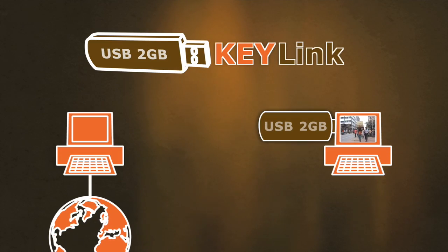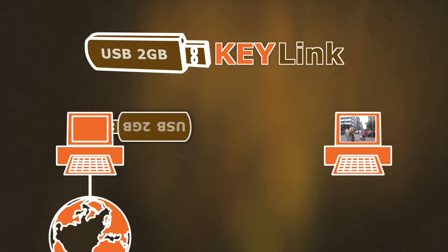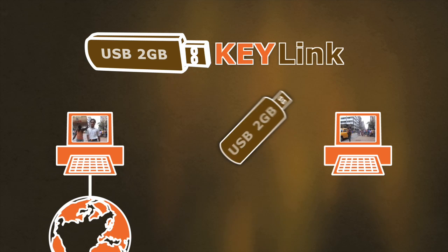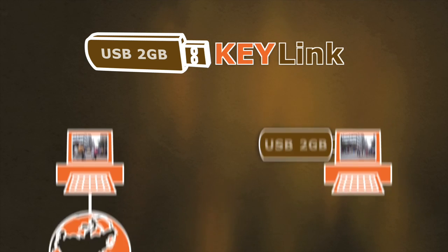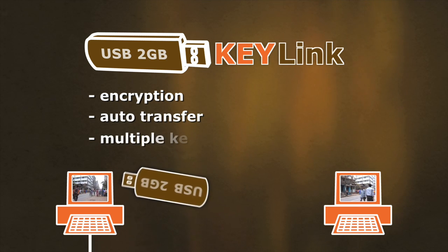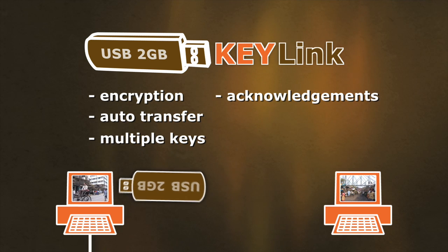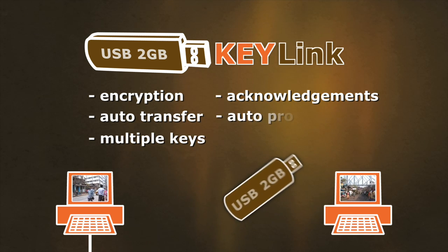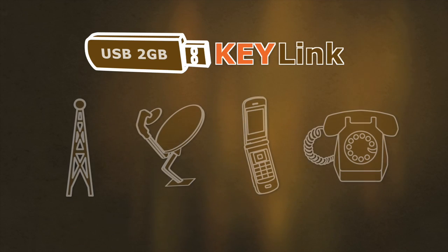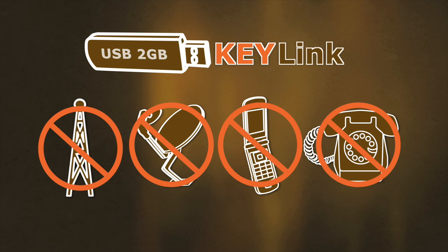KeyLink uses inexpensive USB memory sticks to store and forward large amounts of data from one location to another. KeyLink has several advantages over simply using USB keys to ferry data: files are encrypted and transferred automatically, multiple keys can be used in any order, the sender gets an acknowledgement that the recipient received the data, and the files are processed automatically upon receipt. KeyLink requires no additional infrastructure to work, not even a phone line.